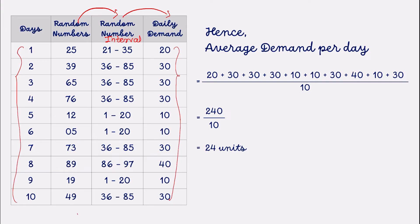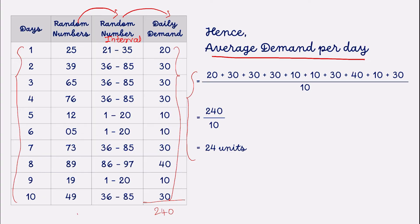They also asked us to find the average demand per day. We take the total of the daily demand column, which is 240, and divide by 10 — because 10 days of data are available. The answer is 24 units. This completes simulation question number 1. In the next session we will start with questions number 2 and 3 for more practice.